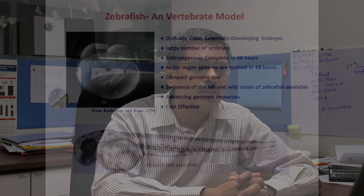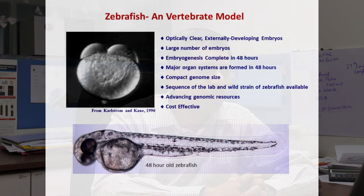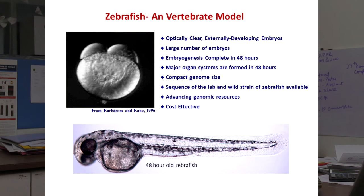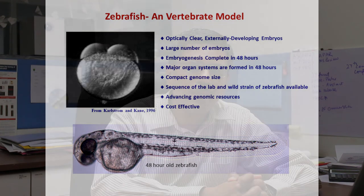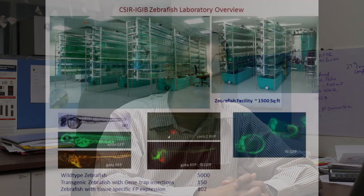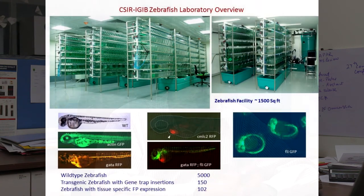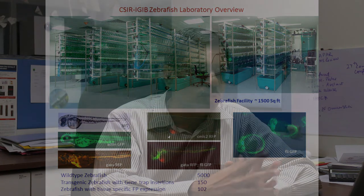To recap why we use zebrafish as a model organism: it has optically clear, externally developing embryos; a single pair of animals lays large numbers of embryos; embryogenesis is completed in about two days with most organ systems formed; it has a compact genome about half the size of the human genome; and many genomic tools have been developed, with sequences of both laboratory and wild strains available. A zebrafish facility can harbor thousands of animals for biological experiments.